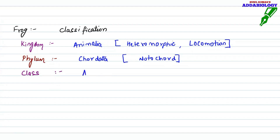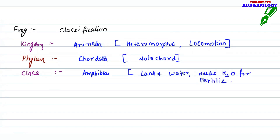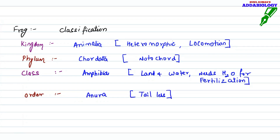After Phylum, we have Class. Frog belongs to Class Amphibia, meaning it lives on land as well as in water, and they require water for fertilization — even a small amount of water is sufficient. After Class, the Order: frog belongs to Order Anura, meaning tail-less. Frog is the only amphibian which does not have a tail.